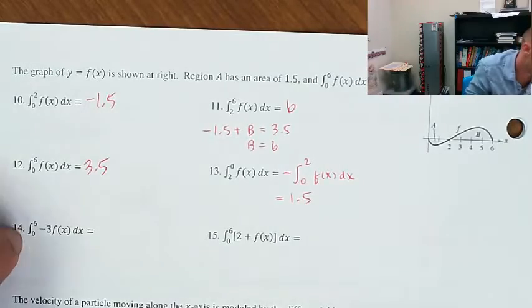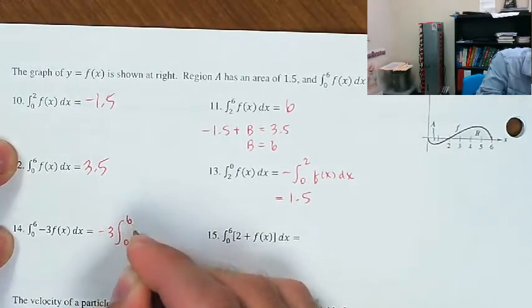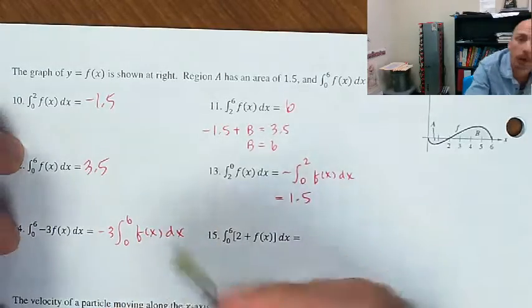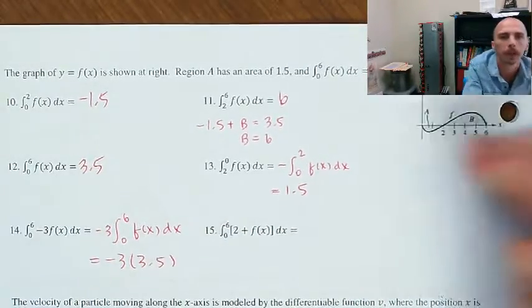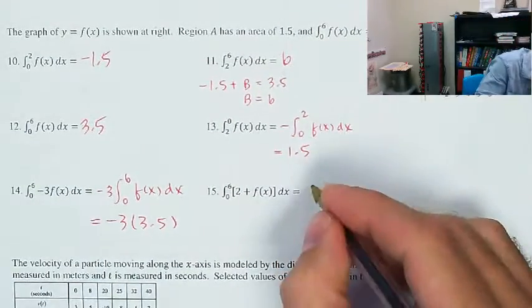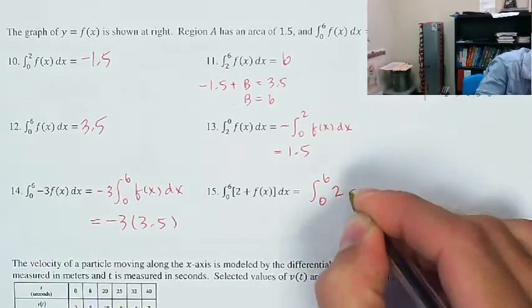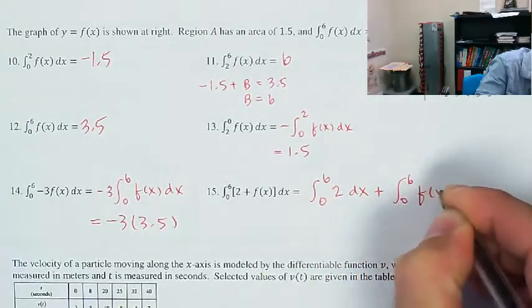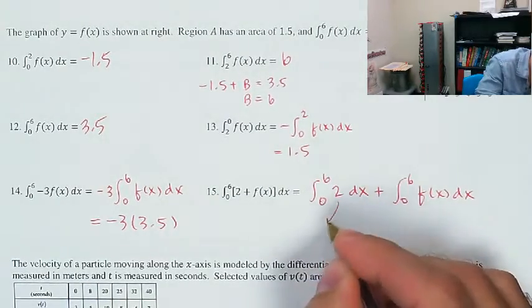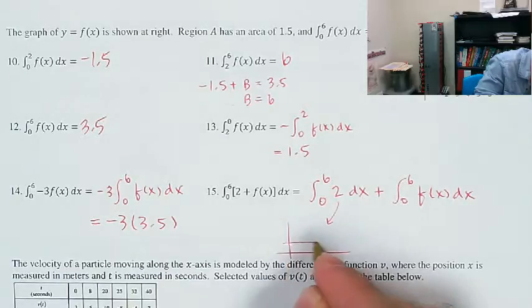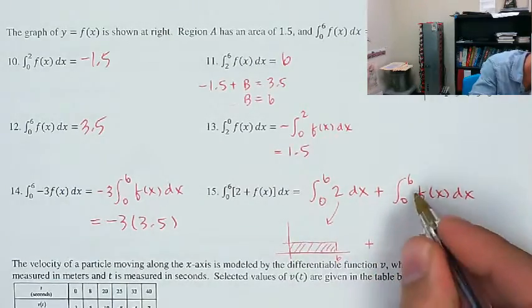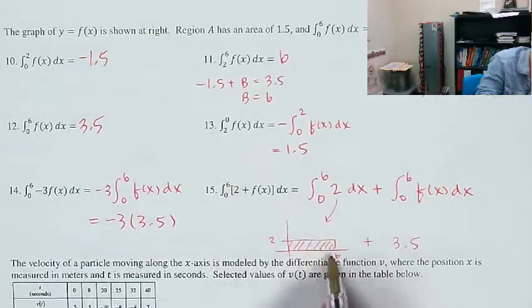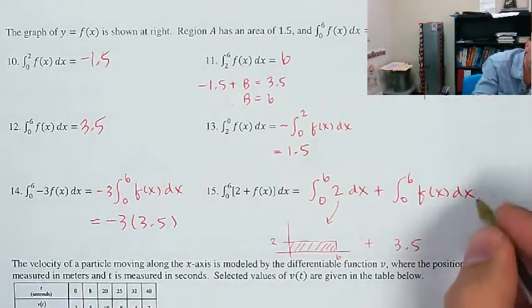The integral of negative 3·f(x) from 0 to 6 equals negative 3 times the integral from 0 to 6 of f(x) dx. We already know that's 3.5, so this is negative 3 times 3.5. For the integral of (2 + f(x)) from 0 to 6: split it — integral of 2 from 0 to 6 is a rectangle with area 12, plus 3.5, which equals 15.5.